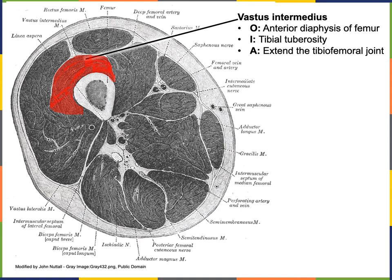Vastus intermedius, located deep to rectus femoris, has its origin on the anterior diaphysis of the femur, inserts on the tibial tuberosity, and performs the action of extension of the tibiofemoral joint.